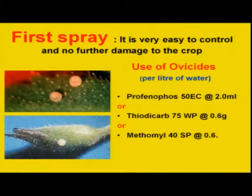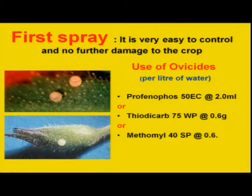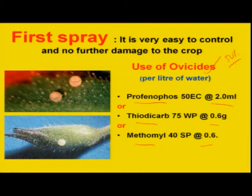As a first spray in the case of pigeon pea, flowering normally starts after 60 days. With the onset of flowering, Helicoverpa or Maruka damage is seen — egg laying begins with flowering commencement. That is why, at 50 percent flowering, we monitor egg population based on the ETL. As a first spray, we can use insecticidal applications belonging to ovicides. A good number of ovicides have been listed with recommended dosages, and they can be applied as the first spray.